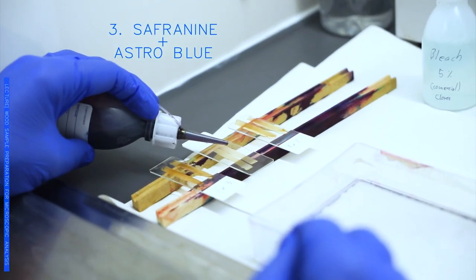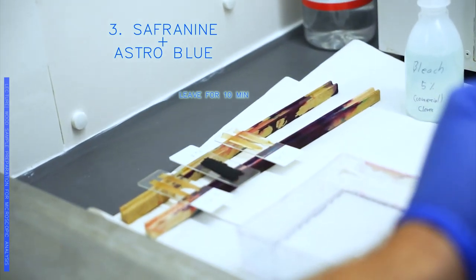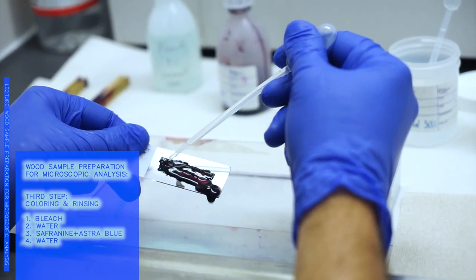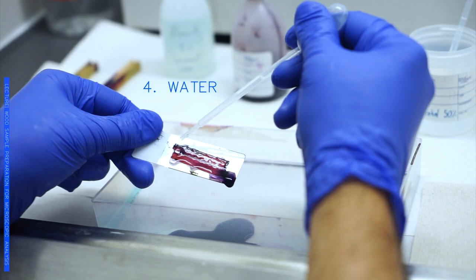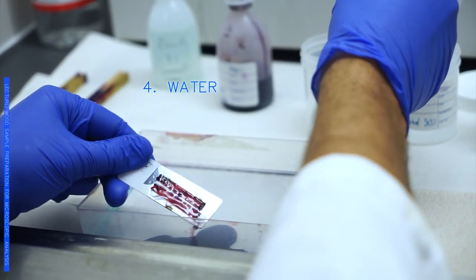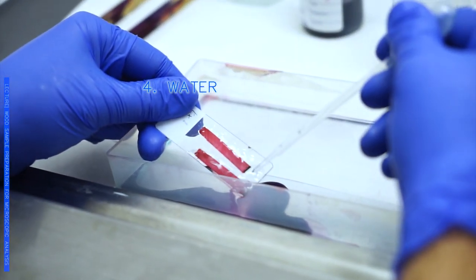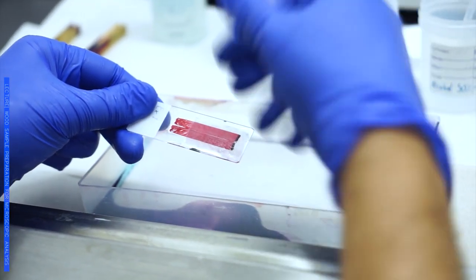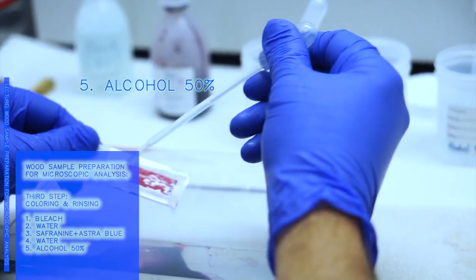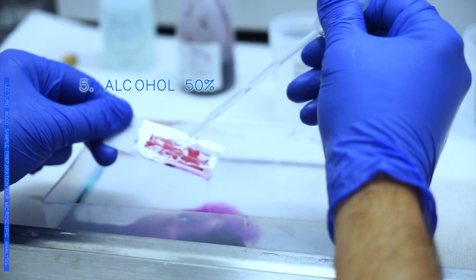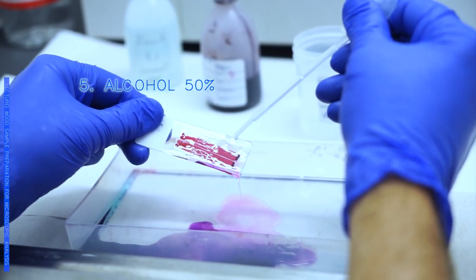Once we have already had our samples around 10 minutes on Safranine, we will start washing it with water to get the excess out. Once we get most of the excess Safranine out, I use a small piece of paper tissue to block our sample so that they will not be moving around. We start washing it with alcohol 50%. Even though it seems that we have already cleaned it, the water will still bring out a lot of the colorant and we will have to do this for a couple of minutes.